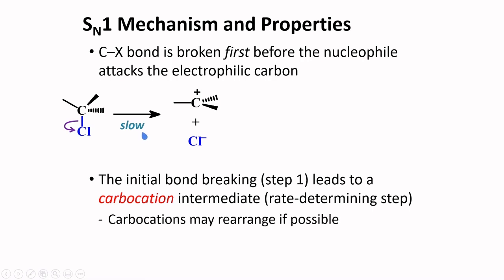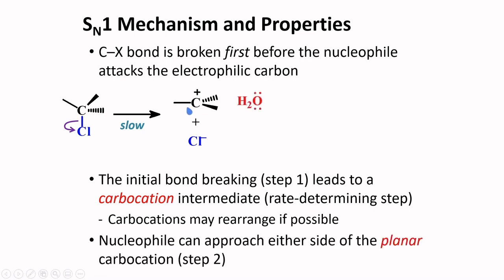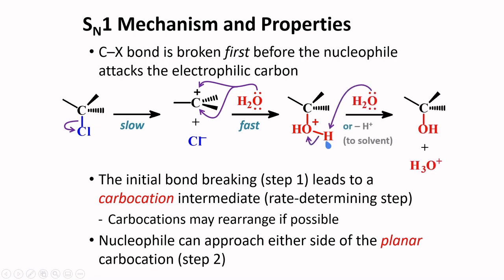Take note that when you have carbocations, they may rearrange to form more stable carbocations. The nucleophile can approach either side of the planar carbocation. This is a fast step. In the case of my example, there is a proton here that can be taken by another water molecule, or another solvent, to form the final compound, which is an alcohol.